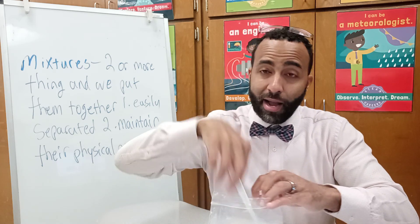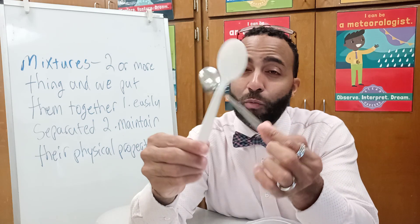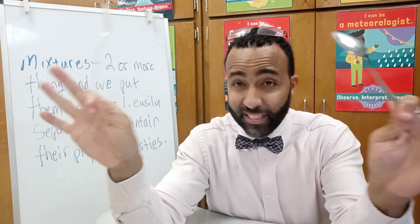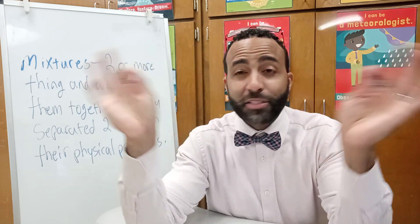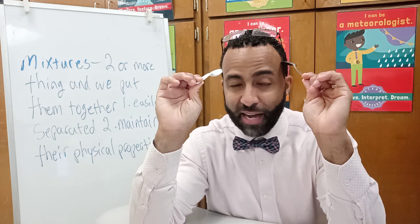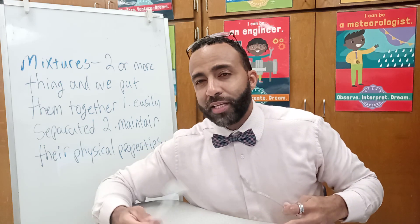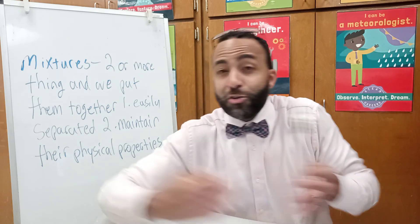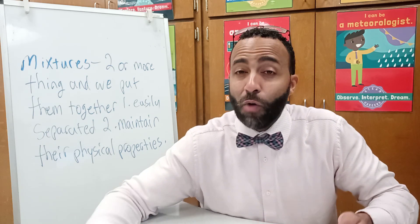I can say, oh my gosh, this is a plastic spoon and this is a metal spoon. And although they were mixed together, their physical properties did not change. Where have you seen a mixture? I'm sure you've seen mixtures everywhere. Can you think of a mixture that you've seen? Where did you see it? How did you interact with the mixture? Now that you're looking back on it, if you had to describe why it was a mixture, what would you say?